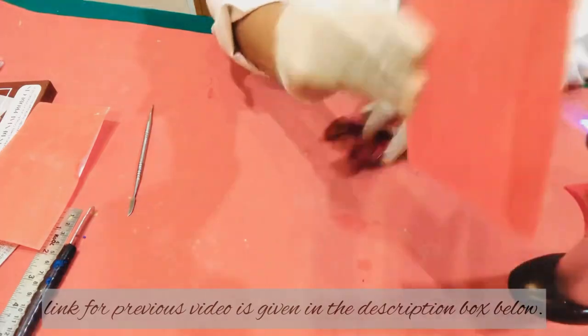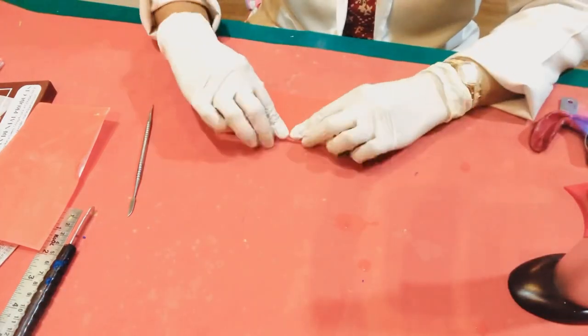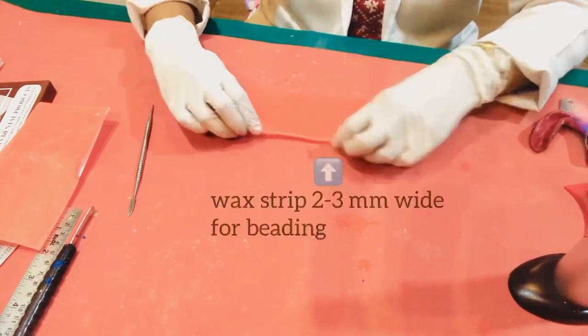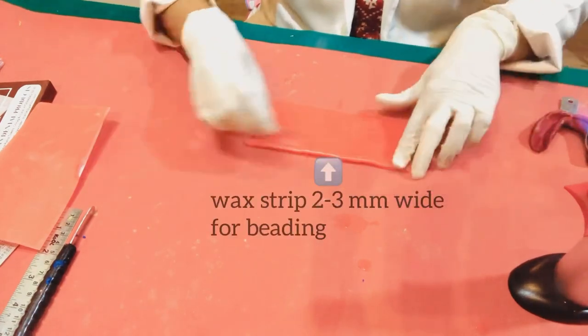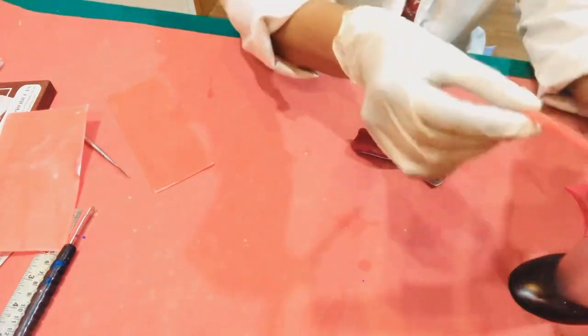Soften one edge of the wax sheet and fold it twice to get a wax strip of width two to three millimeters. Soften this wax strip over a flame and adapt it around the impression two to three millimeters below the border of the impression.